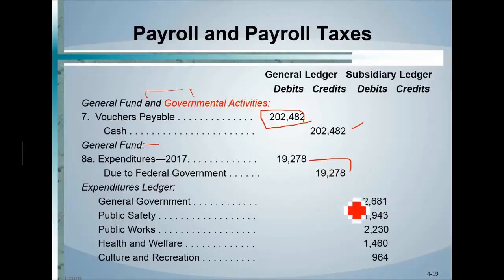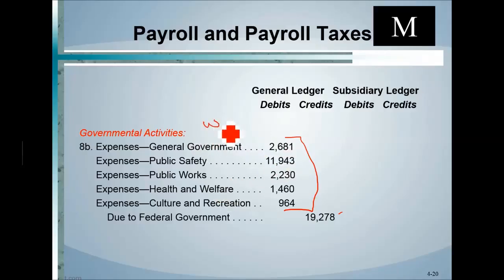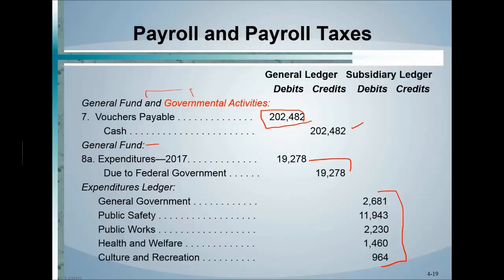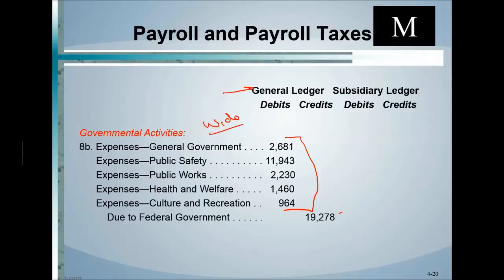For the general fund specifically, the due-to amount owed to the federal government is paid here. All federal government contract amounts are expensed in this direction. On the government-wide side, this goes straight to the general ledger debits — the general ledger takes the main expenditures control account with subsidiary ledgers on the fund side, whereas government-wide has no subsidiaries.